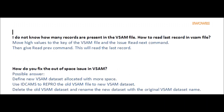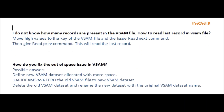Question: I do not know how many records are present in the VSAM file. How do I read the last record in the VSAM file? Answer: Move HIGH-VALUES to the key of the VSAM file and issue the Read Next command. Then give the Read Previous command. This will read the last record.